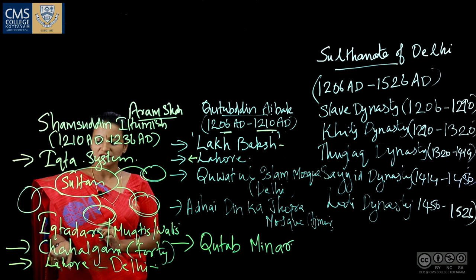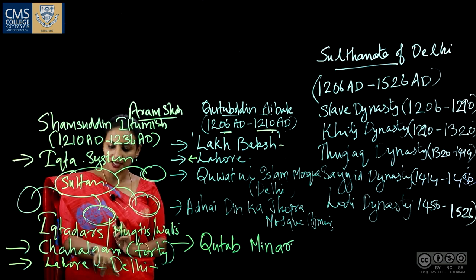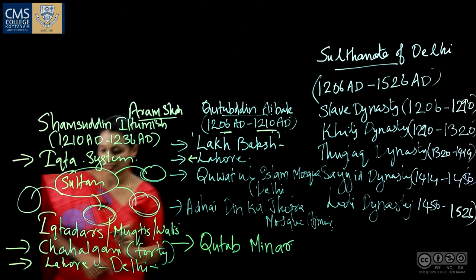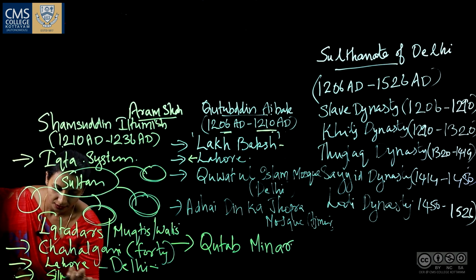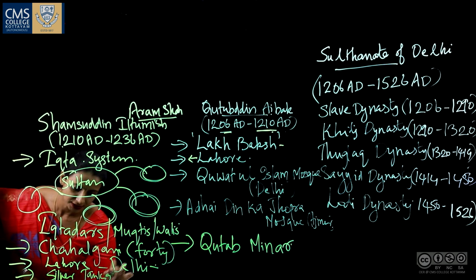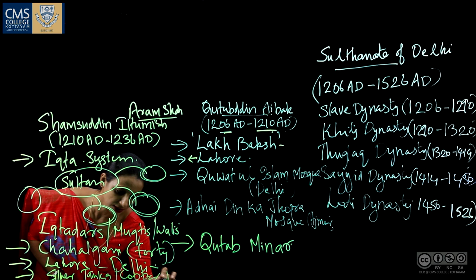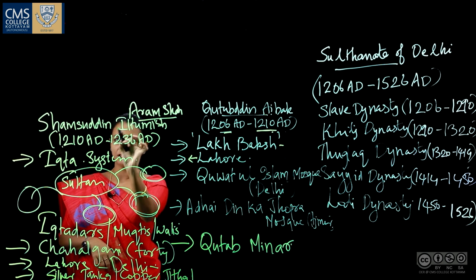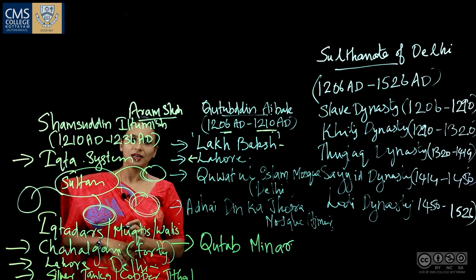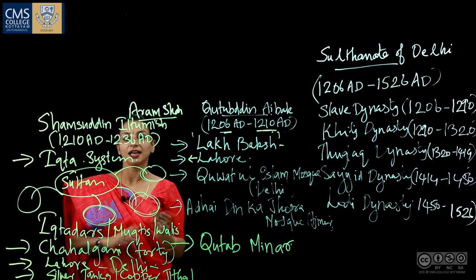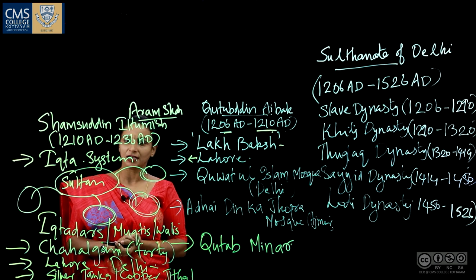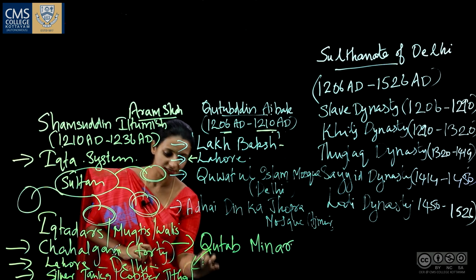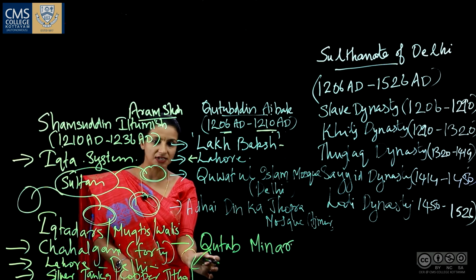Iltimish transferred his capital from Lahore to Delhi and also introduced two basic coins of the Sultanate: the silver tanka and the copper jittal. He also completed the construction of the Qutub Minar in the year 1220 AD.